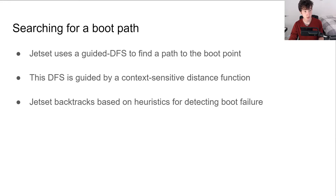The distance function helps JetSet find the shortest path to the boot point, but the shortest path is not always the correct one. When JetSet reaches a failure to boot — for example, if it causes a system reboot or hangs inside of an infinite loop — it backtracks to the last point that is closest to the boot point. I can provide an example that should give you an intuition as to how JetSet works in practice.